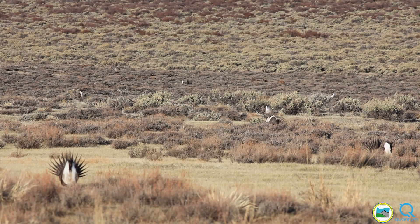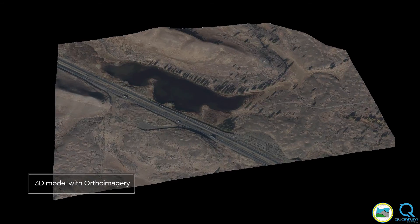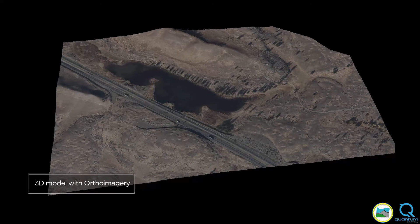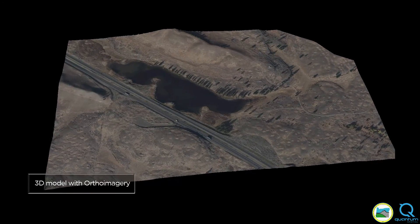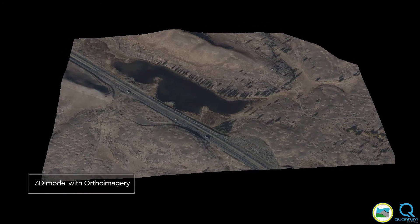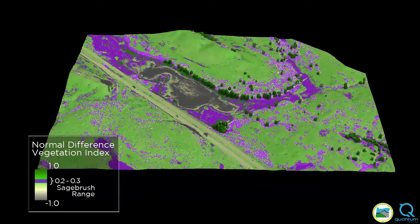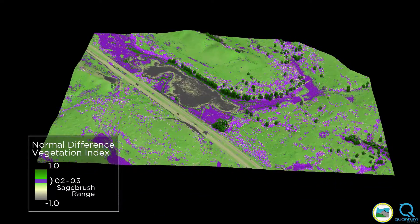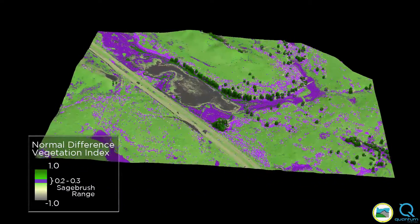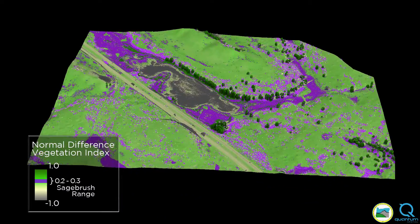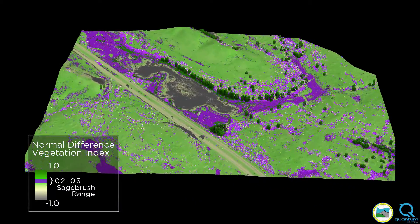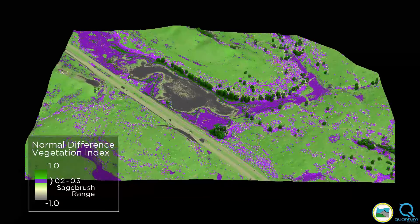Quantum Spatial classifies vegetation using near-infrared imagery. The Normalized Difference Vegetation Index, or NDVI, shows the range of potential sagebrush areas in purple.